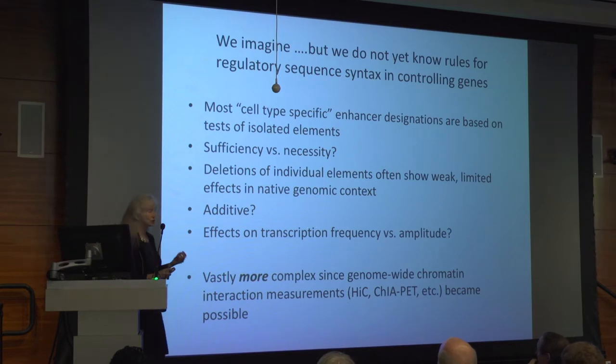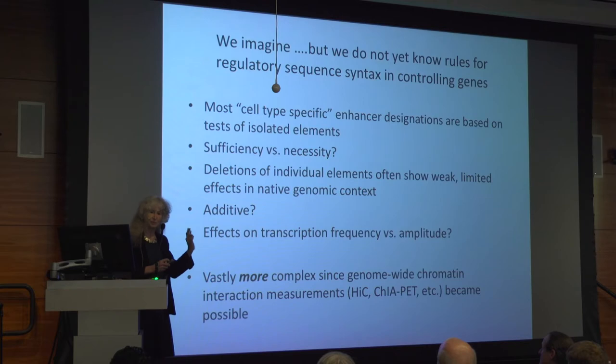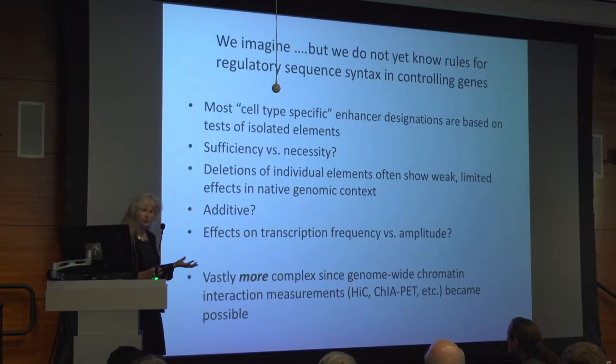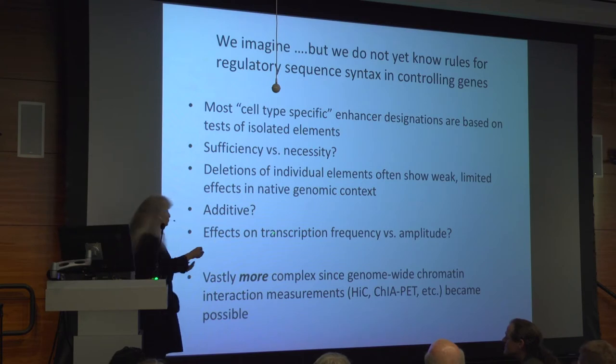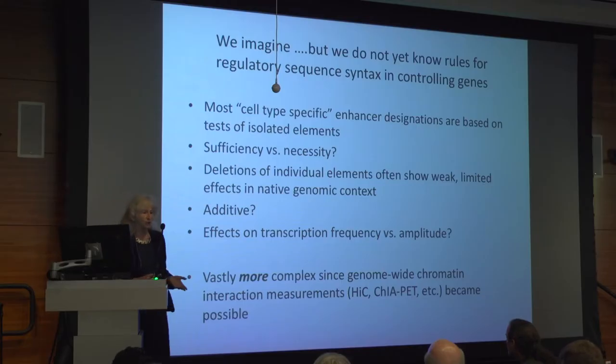You often see weak, limited effects of deletions of individual elements. The question is whether they are additive in their activity, or whether they have roles in a specific state but not another. As we understand more about the biochemistry of gene expression, we realize there's transcriptional bursting, where RNA polymerases can make a whole series of initiations on a gene and then pause. This means we don't really know how to recognize the difference between an enhancer starting a burst, loading one polymerase, or opening chromatin for other things to take over. This whole system has become vastly more complex as we appreciate the scope of the problem through genome-wide chromatin interaction measurements — this hasn't simplified things.